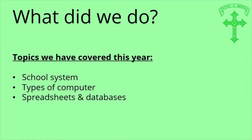First things first, what did we do? The three topics we covered in full this academic year were: the school system — that's how to log in, how to send an email, how to send an attachment, how to create a folder — and types of computer, which included software, utility software, hardware, what's inside a computer like the RAM and the CPU, things like that.